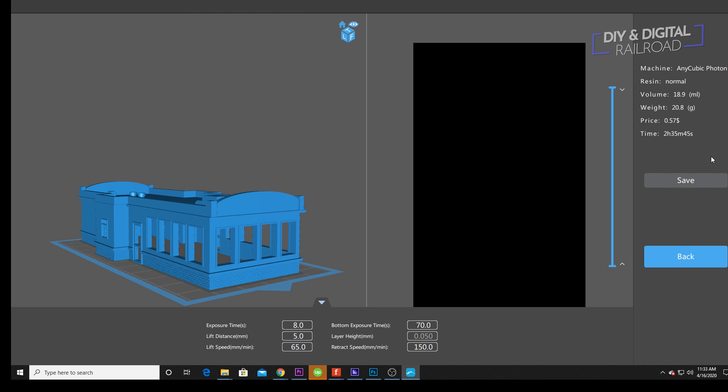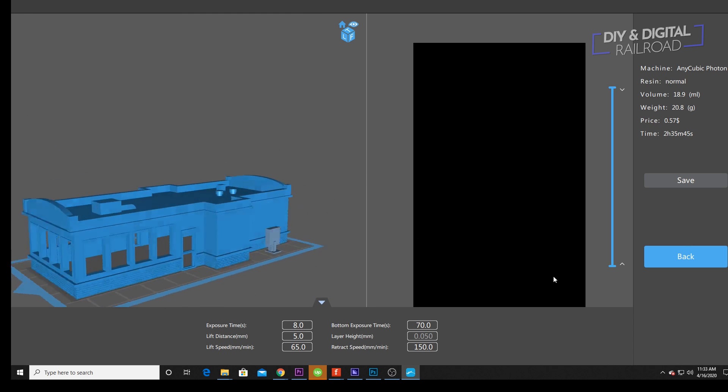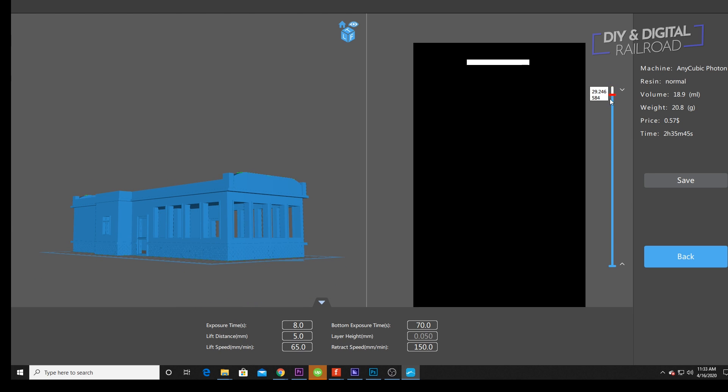Once I've sliced the file, it tells me all the details I need to know for printing the model itself. I can then take a look at each layer and what will be shown on the LCD screen. And I can go ahead and save it.